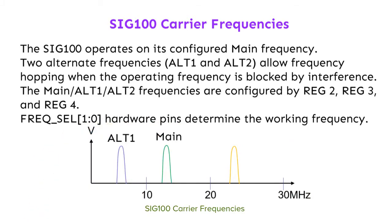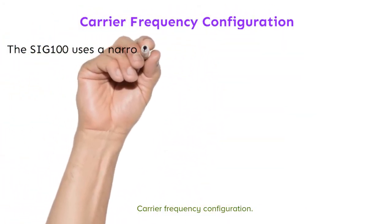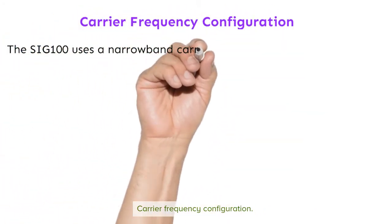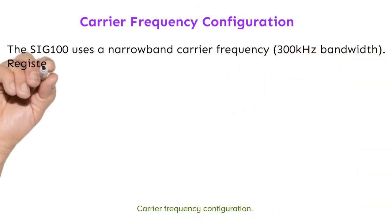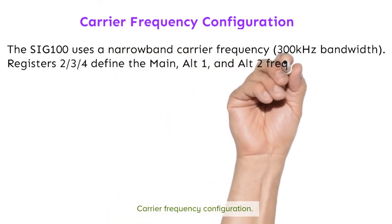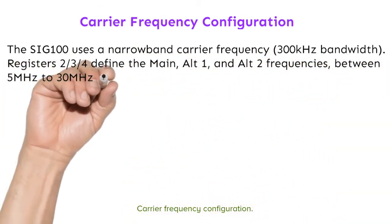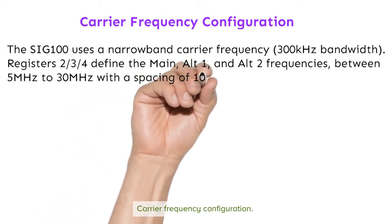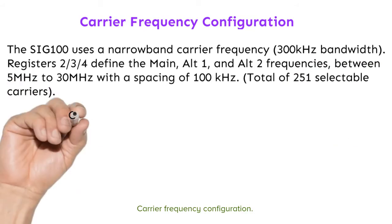Frequency select pins 1 to 0 — hardware pins determine the working frequency. Carrier frequency configuration: the SIG100 uses a narrowband carrier frequency with 300 kHz bandwidth. Registers 2, 3, and 4 define the main, ALT1, and ALT2 frequencies between 5 MHz to 30 MHz with a spacing of 100 kHz, for a total of 251 selectable carriers.